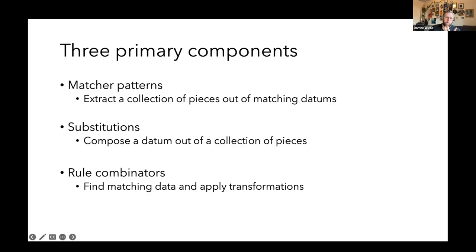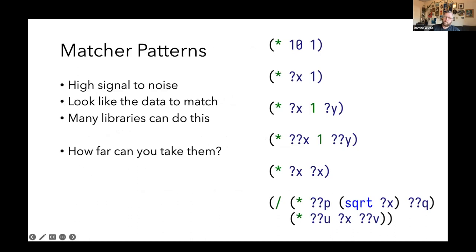There are three primary pieces in Pattern: the matchers - the patterns themselves - where you define a pattern to match against, send data to it, and if it matches it'll extract the pieces you select; substitutions, which is kind of the inverse where you've got some data and you want to create a piece of data combining them into some structure; and rule combinators, which combine pattern matching and substitutions.